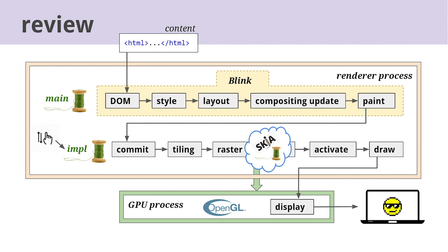Quick recap: we've taken web content, built a DOM tree, resolved its styles, updated the layout, created compositing layers and property trees, painted the layers, committed the layers' paint ops and property trees to the compositor thread, broken the layers into tiles, rastered the tiles on worker threads, copied the pending tree to the active tree, generated draw quads from the rastered output, submitted those quads to viz, and displayed them on screen in the GPU process. Most of the pipeline runs in the renderer, but the GL calls for raster and display are in the GPU. The core rendering stages — DOM, style, layout, paint — are in Blink code on the main thread, but input events for scrolling and zooming can hit the compositor thread and update layers there while the main thread is busy.